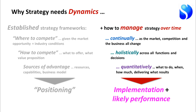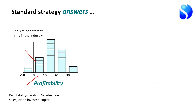How does strategy dynamics help add that important extra dimension to strategy teaching? Well, if you think about those standard strategy answers, they are essentially based on decades of research into answering the question about why some firms are more profitable than others. So if we look at the distribution of profitability in an industry, in this chart, you've got the number and size of companies in the industry stacked up in each of those bars. And each bar is a profitability band. So on the left, you've got some small companies making losses, and on the far right, you've got one company making very high rates of profitability. And in the middle, you've got a mix of large, medium, and small companies making less profit, moderate profits, and more profit.